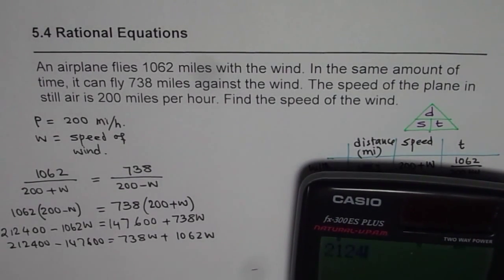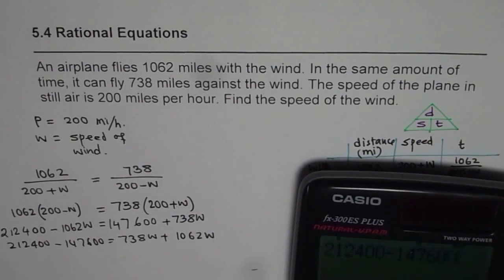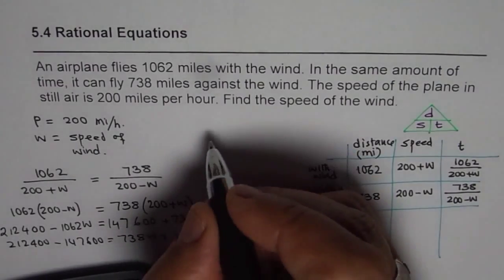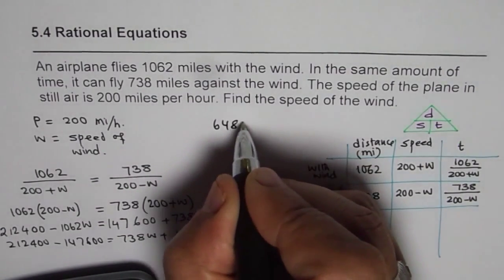Let me use the calculator now. To take away 212,400 minus 147,600 gives us 64,800. So let me write here. 64,800 equals to. Let's add these two. 738 plus 1062, that gives us 1800w.